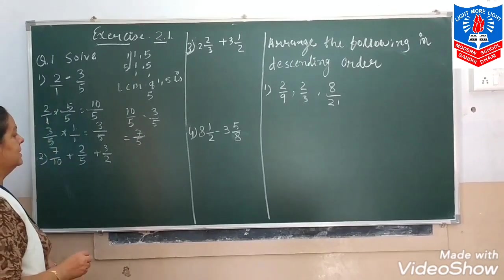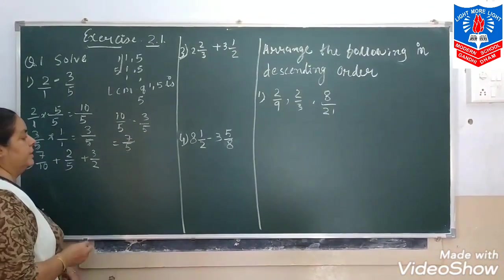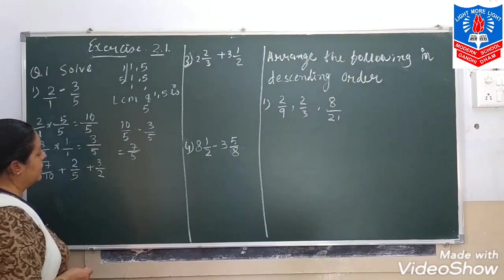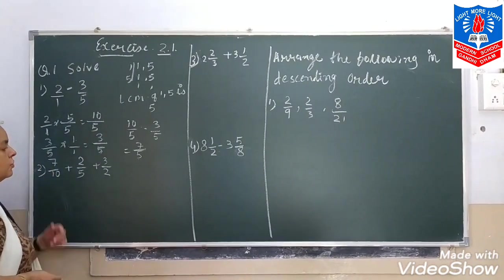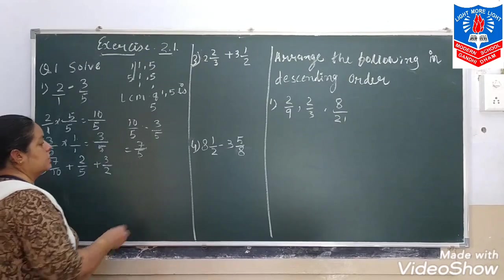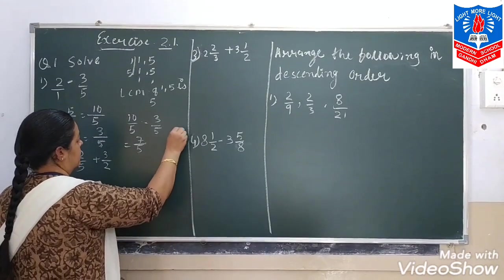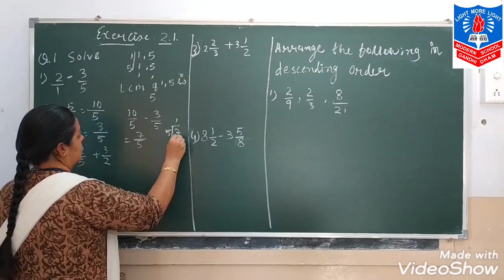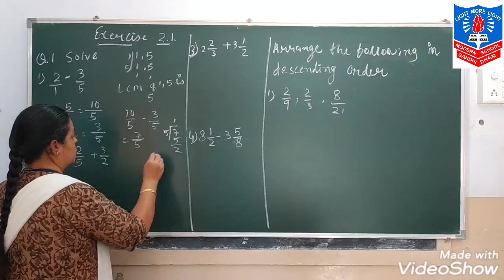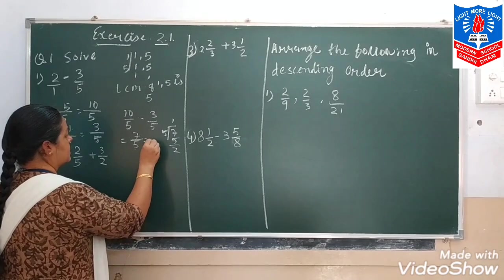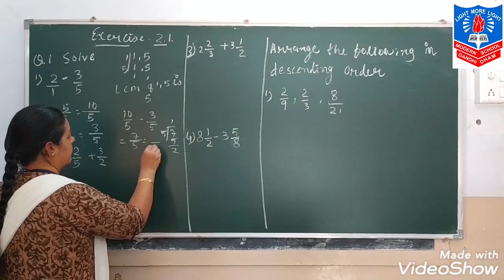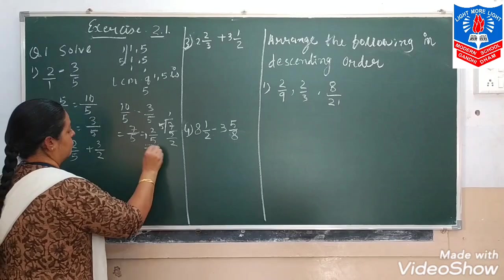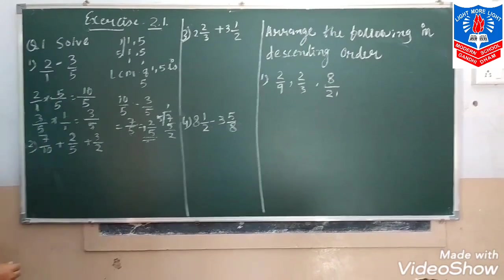See, denominator is 5 and numerator is 7, so it is an improper fraction. We convert it to a mixed fraction: 7 divided by 5, 5 ones are 5, remainder 2. So our answer is 1 integer 2 by 5.